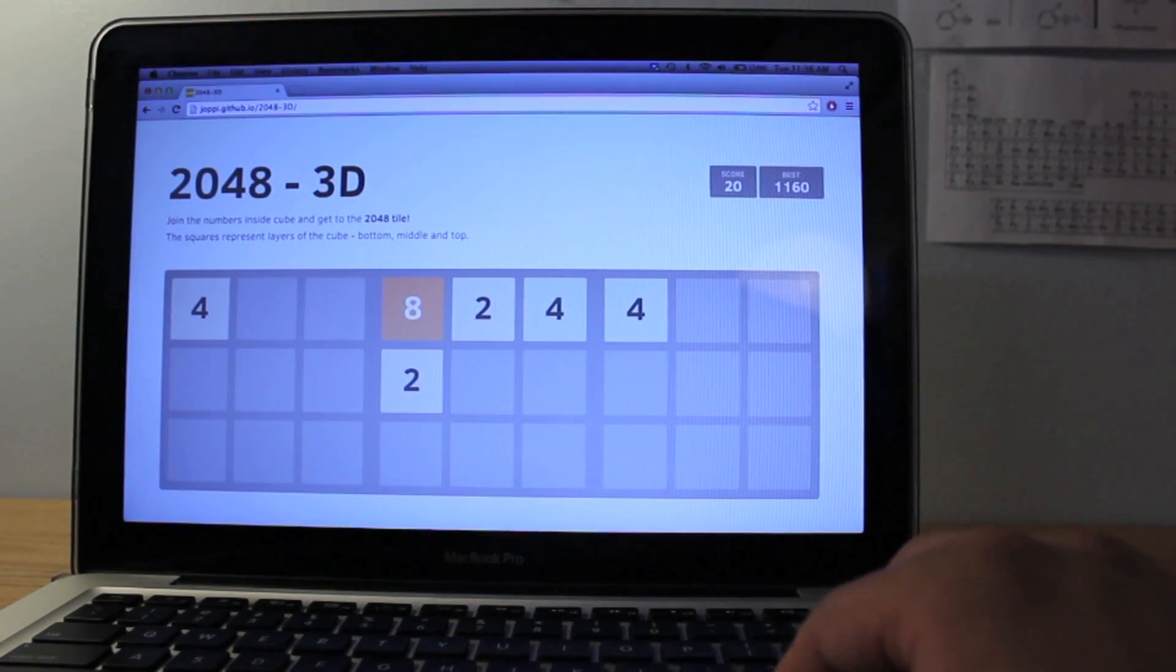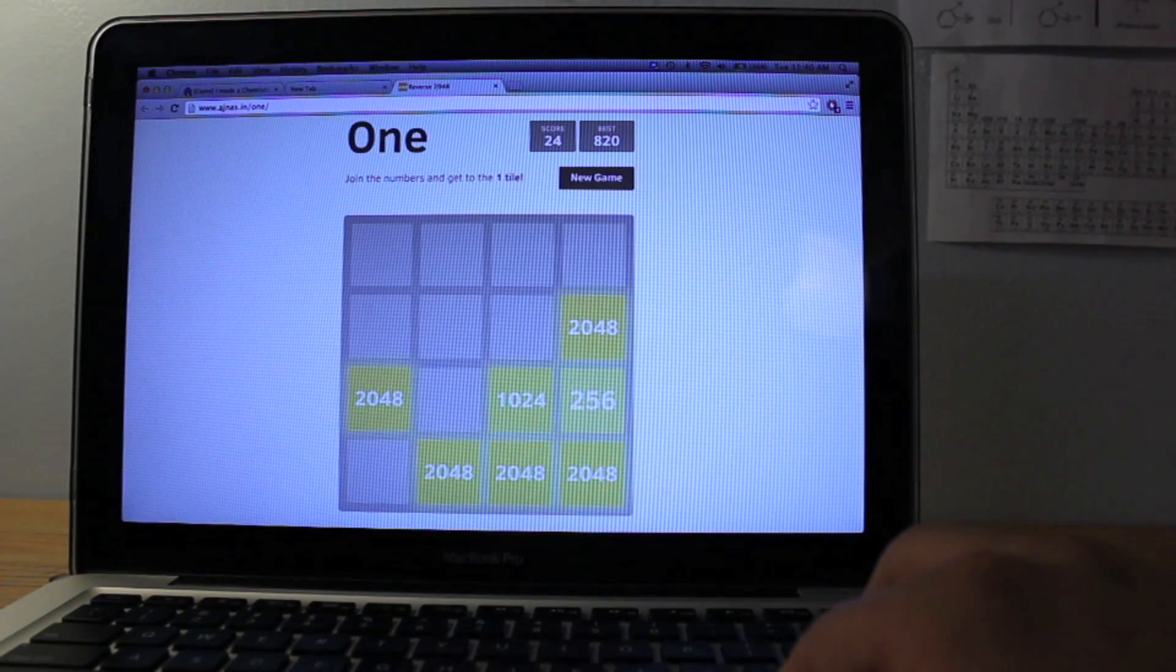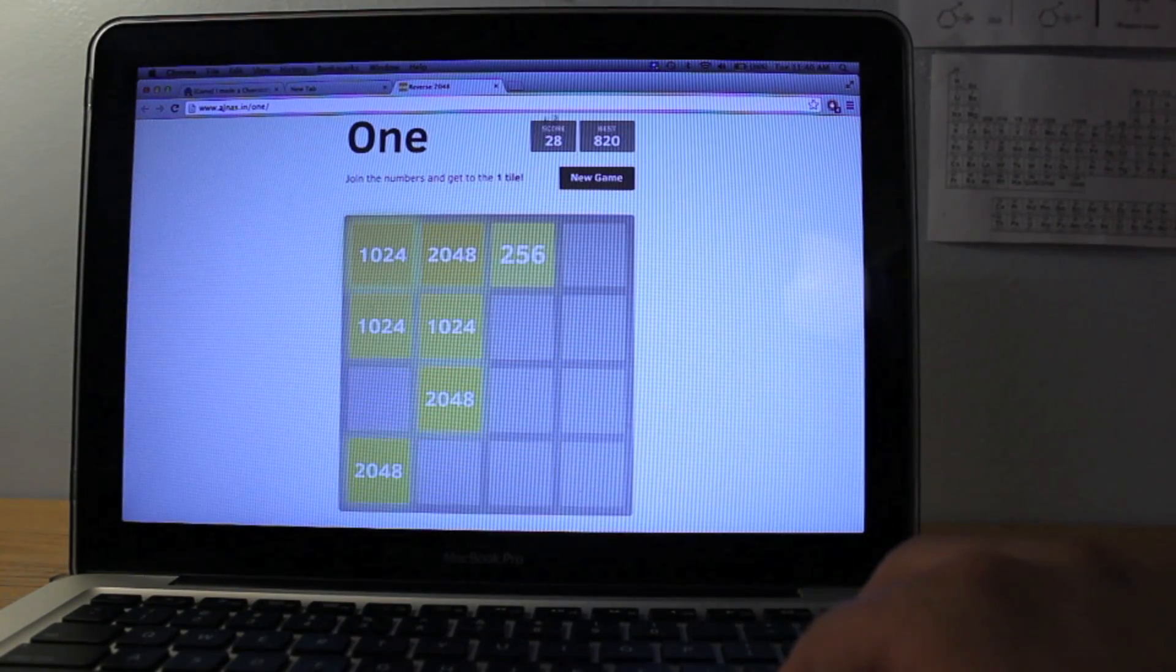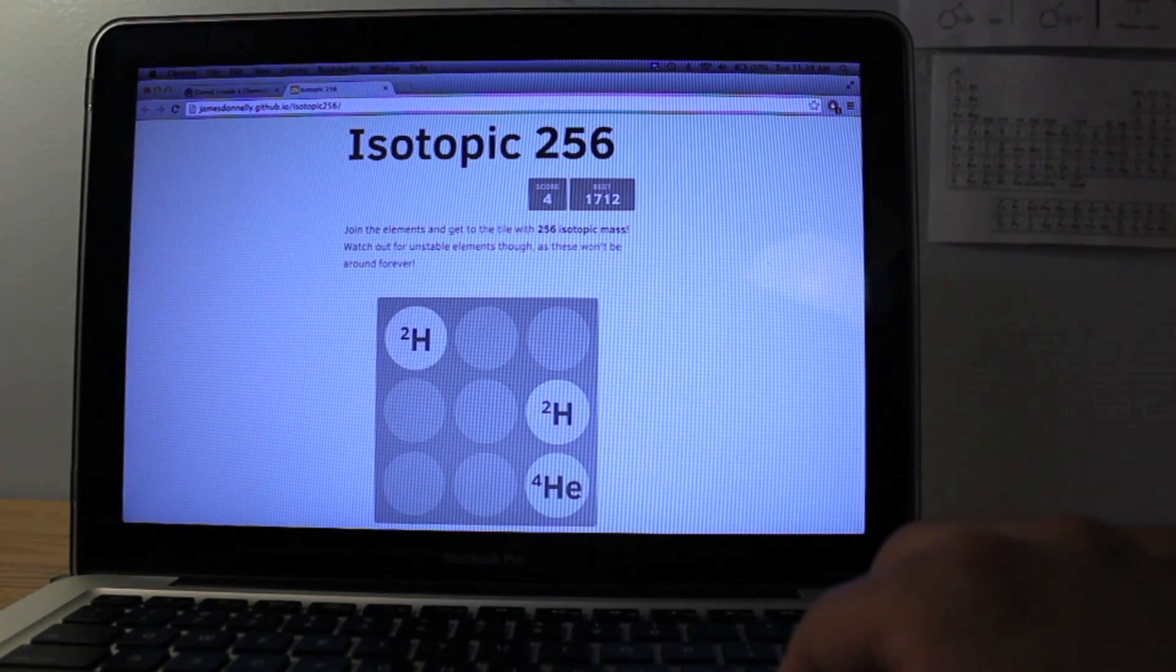So the code for 2048 is open source, meaning anyone can go in and play with it and tweak it how they like. If you really want to let your geek flag fly, try this 3D version. Or how about this one based on the Fibonacci series. Or this one where you start with the 2048 tile and work your way back down to one. And my favorite, you can do this one where instead of combining numbers, you combine elements.